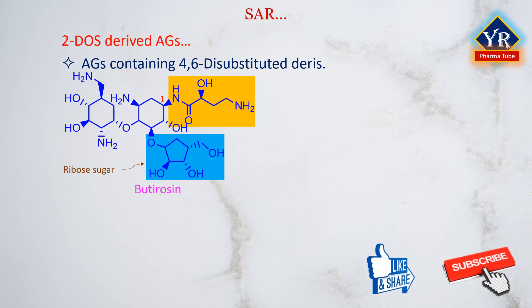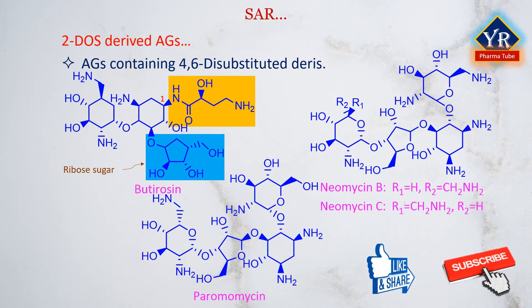As with the 4,6-disubstituted derivatives, the 2-deoxystreptamine nucleus can be acylated at the C1 amino functionality to provide N-hydroxybutyryl derivatives that retain good antibacterial activity. For example, butyrosins contain a ribose unit that lacks an additional sugar at C3. Both the neomycins and paromomycins contain C3 and C4 hydroxyl groups. The C3 position is targeted by bacterial enzymes that destroy activity. A C2 amine group is present in both and appears to be needed for useful activity. The neomycins contain a C6 amine group while paromomycins possess a C6 hydroxyl moiety. The C6 position is susceptible to deactivation by bacterial enzymes.